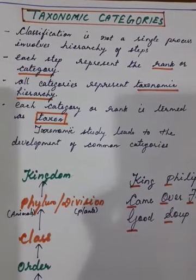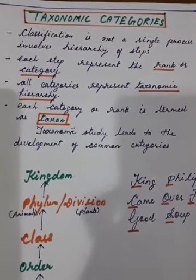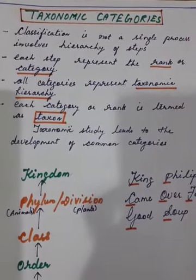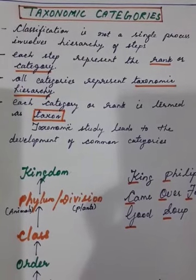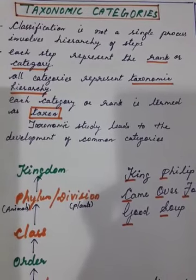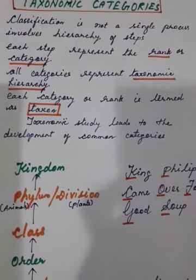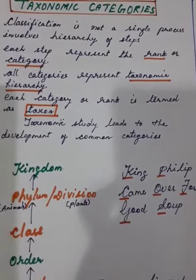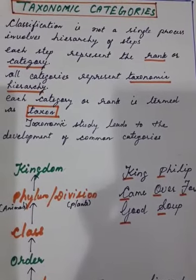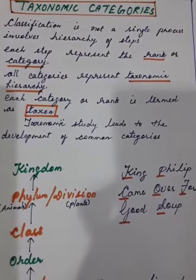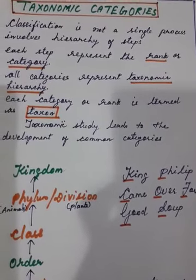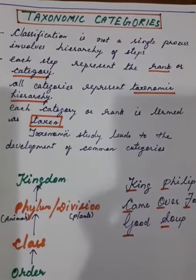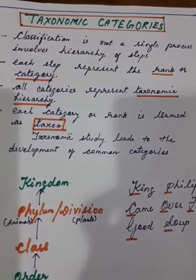Hello students, this is the second video of chapter 1. In the first video, you have learned the introduction of the living world, what is biology, nature and scope of biology, nomenclature, rules of nomenclature, classification, and systematics. Today we will continue with the remaining part of chapter 1. The topic today is taxonomic categories.